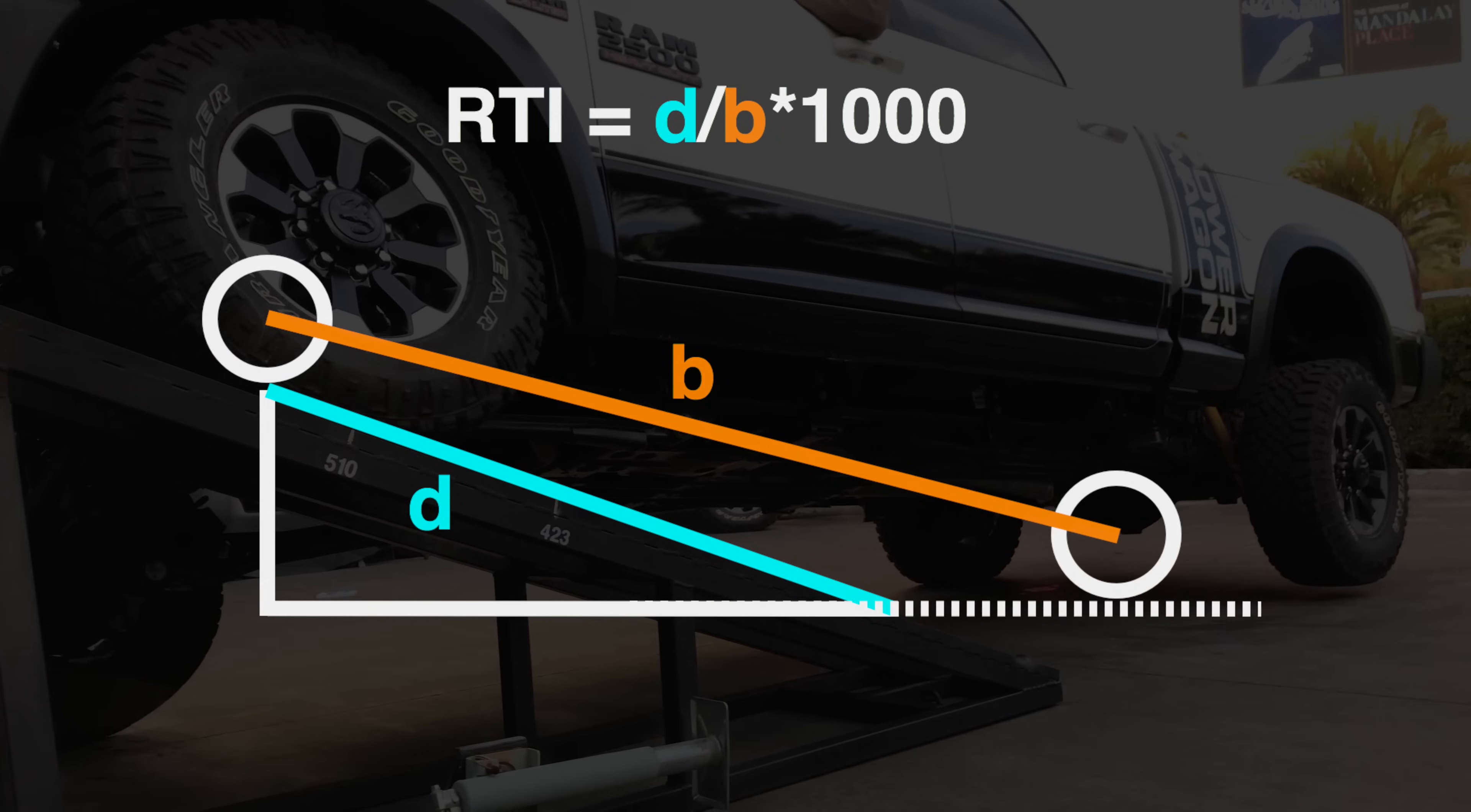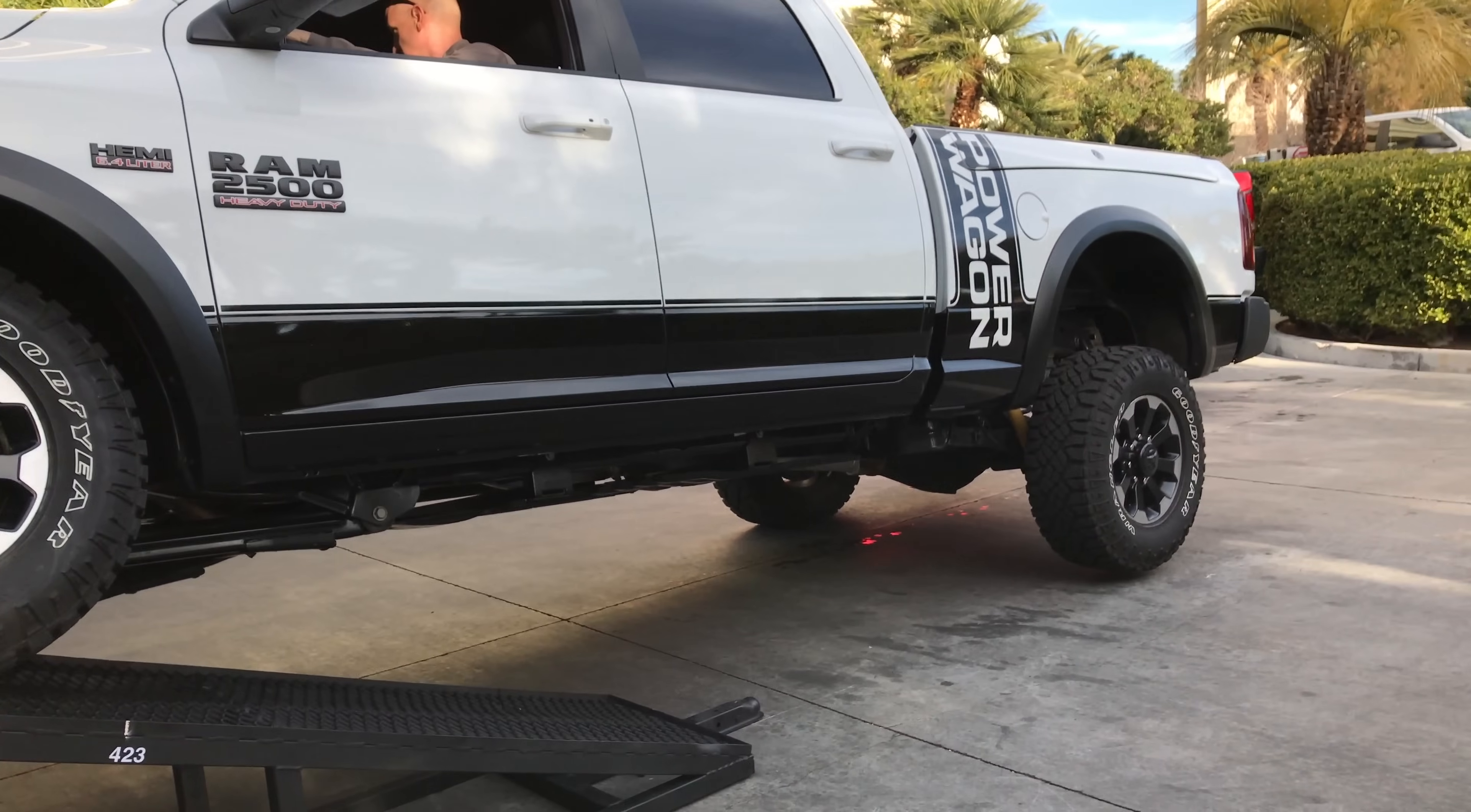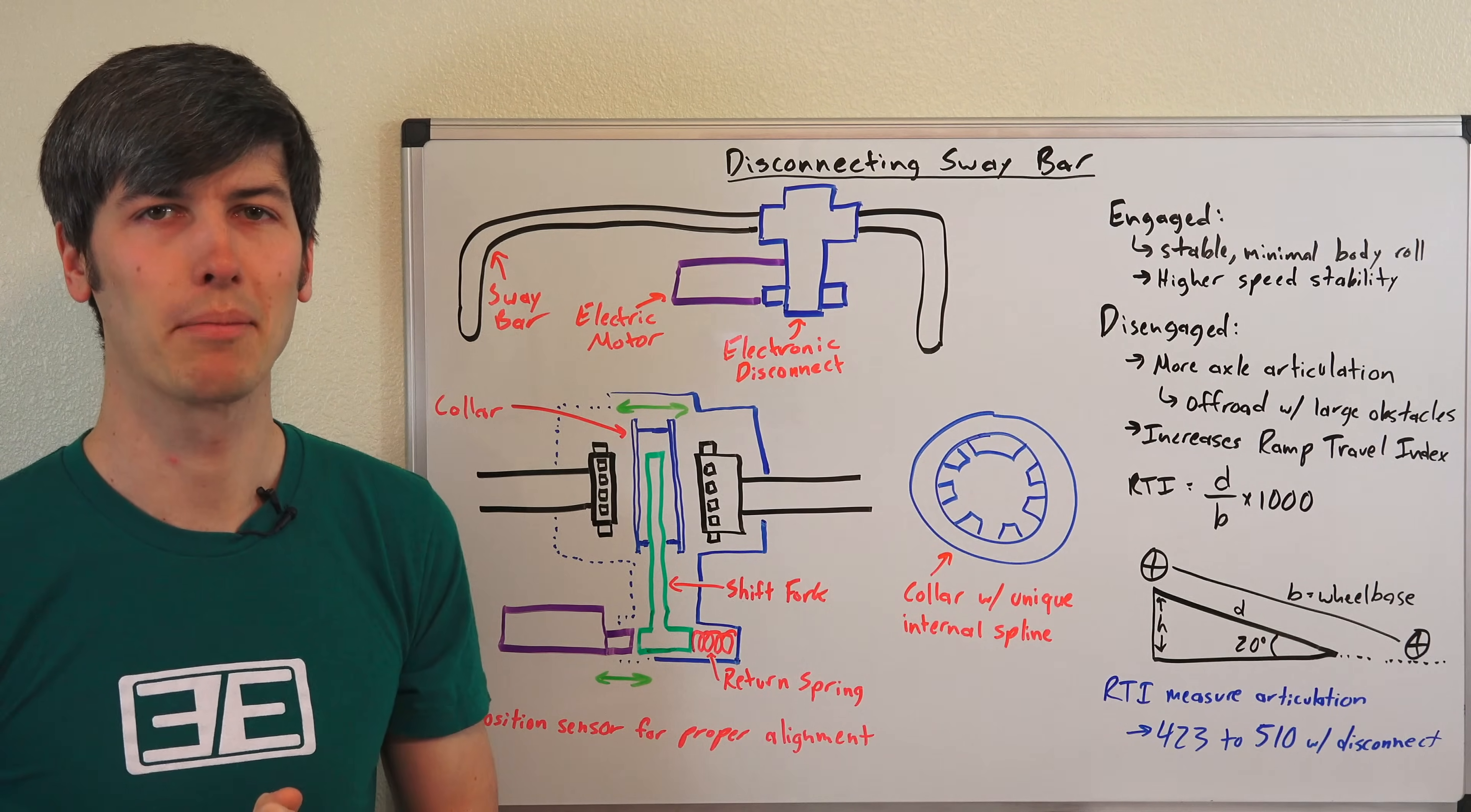This is just a way of measuring articulation. And so on the vehicle which we're showing here, this has a disconnecting sway bar, and by disconnecting that sway bar you can increase its ramp travel index from 423 with it fully engaged to 510 with the sway bar disconnected. So a significant change in how much articulation is going to allow by disconnecting that sway bar. So thank you guys for watching, and if you have any questions or comments, feel free to leave them below.